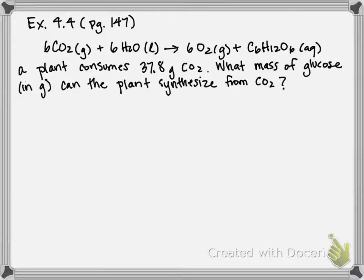So the strategy for this is to start in one mass of something, convert it to moles, then use a mole to mole ratio that we're going to write from the balanced equation to then convert into moles of another substance and then finally convert back into grams.